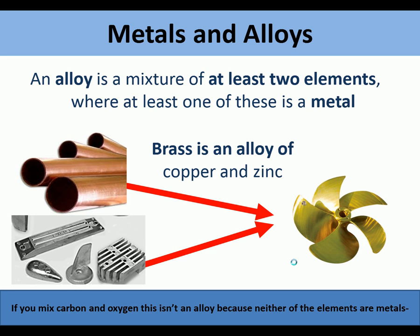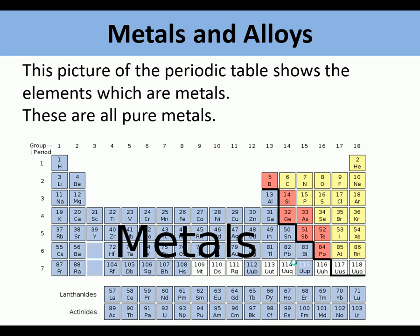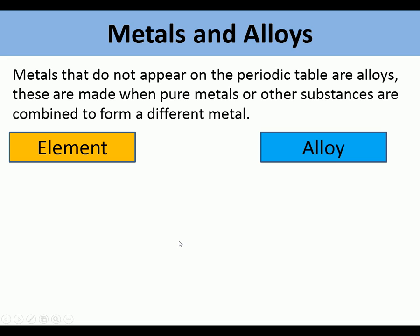An alloy is a mixture of at least two elements where at least one of these is a metal. Brass is an alloy of copper and zinc. If you mix carbon and oxygen, this isn't an alloy because they're not metals. The periodic table shows the elements which are pure metals. Metals that do not appear on the periodic table are alloys — these are made when pure metals or other substances are combined.